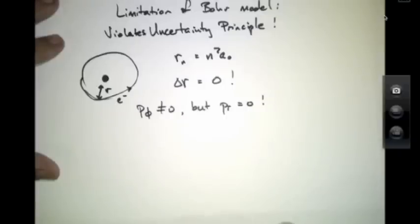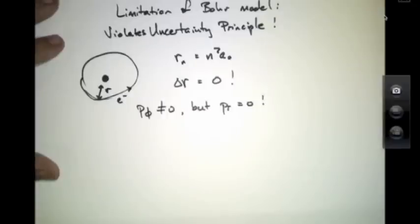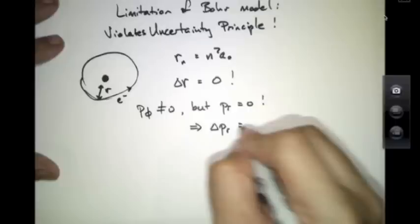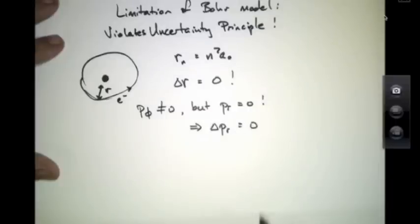Otherwise, it would be waffling in and out of its circular orbit. And this implies that the uncertainty in the radial component of the momentum is zero.